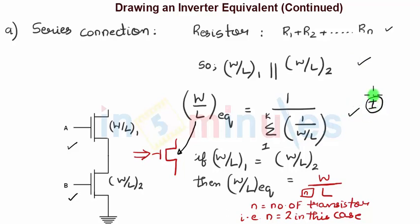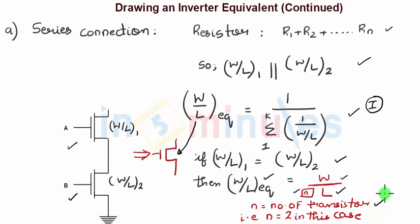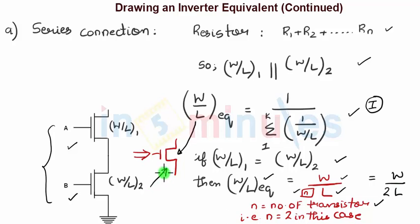We also saw that if W/L of 1 equals W/L of 2, then the W/L equivalent is simply W/L divided by n, where n is the number of transistors. In this case there are two transistors connected in series, so it is divided by 2, giving W/(2L). So the W/L equivalent for two identical transistors in series equals W/L divided by 2.